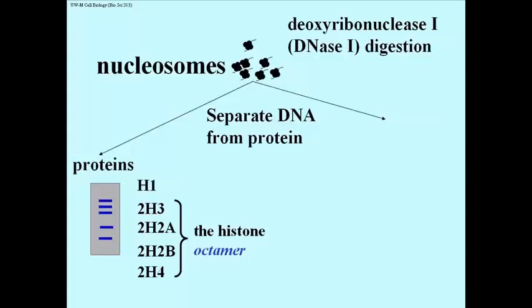An interesting feature of these histones is that unlike most other proteins, they are very rich in the basic amino acids — lysine and arginine for the most part. These are amino acids whose side chains have amino groups.